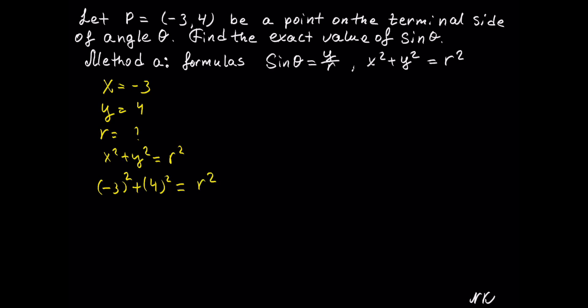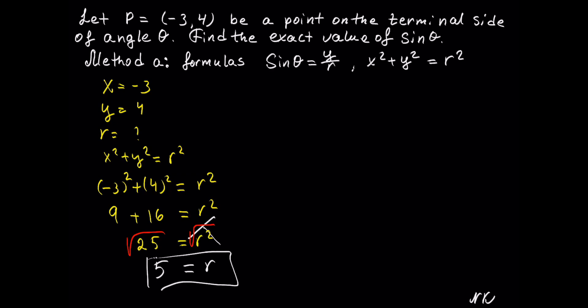Negative 3 times negative 3 is positive 9, plus 4 times 4 is 16, equals r squared. 9 plus 16 is 25, still equal to r squared. Since we are solving for r, we take the square root of both sides. Square root and the second power cancel, and we get r is equal to square root of 25, which is 5.